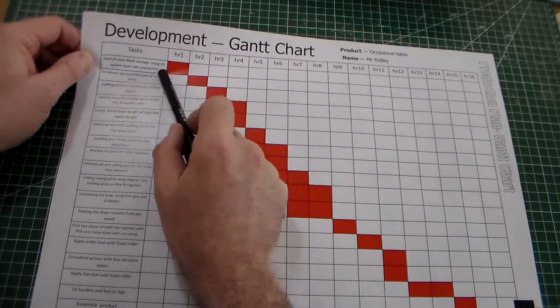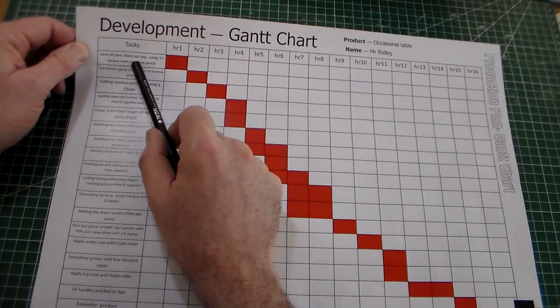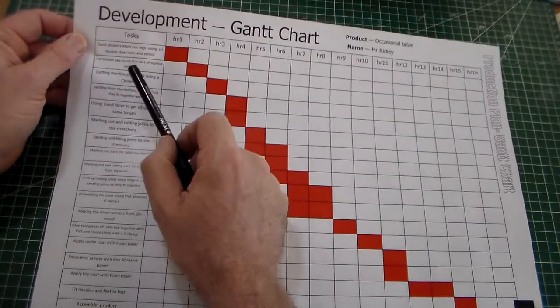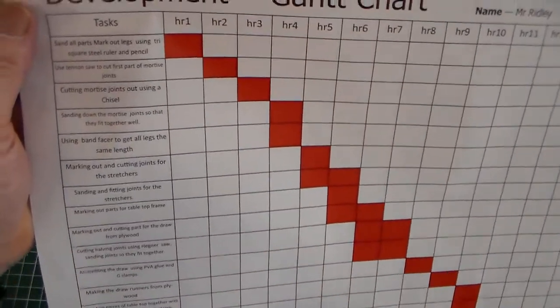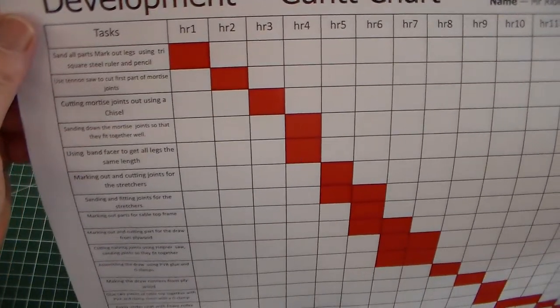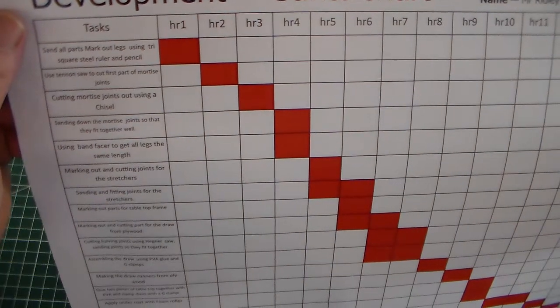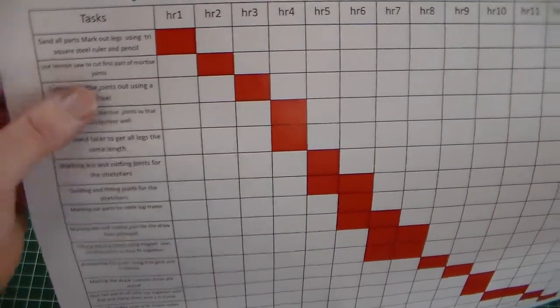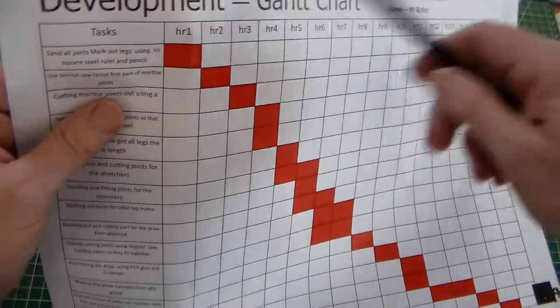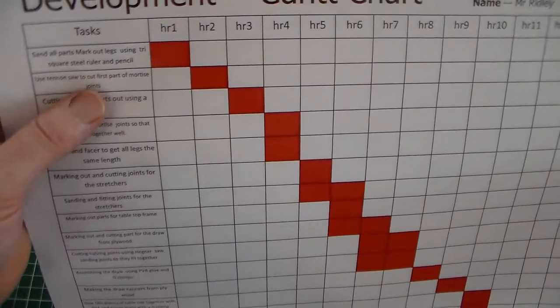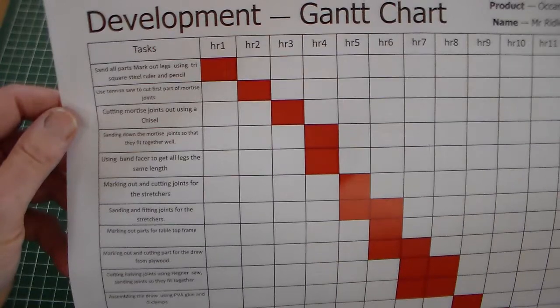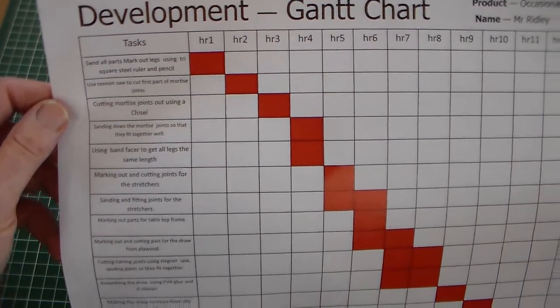So what we've got here is task one, the first task in making. If you can read that, it says task one, and we've got sandal parts, mark out legs using tri-square, steel ruler, and pencil. Then it says task two. So that was hour one. Then hour two, use tenon saw to cut first part of mortise joints. And you can just see there all the different stages.